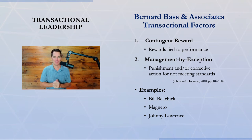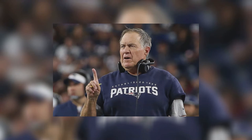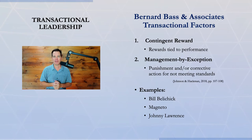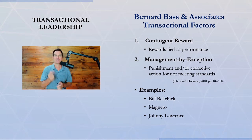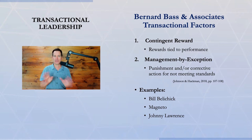An example is Bill Belichick of the New England Patriots, an infamous transactional leader. He's won multiple Super Bowls, so this style can be effective. He's known for simple rewards and punishments: if you do a good job, you keep your position, you get to start and play. If you don't, you get benched, become a second stringer, or get let go. The Patriots have an expression — 'do your job' — a classic transactional leadership philosophy.